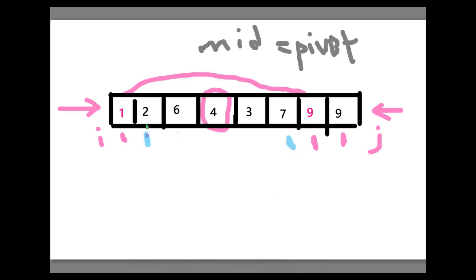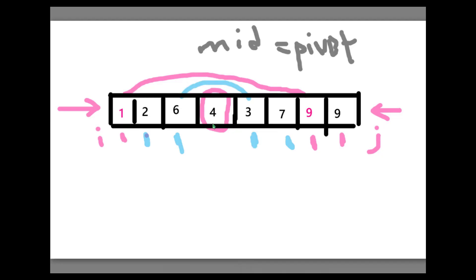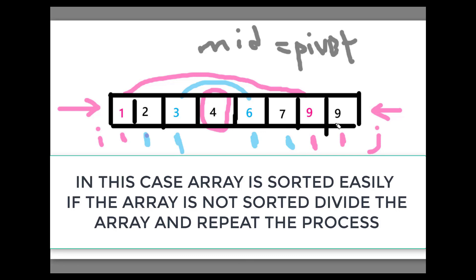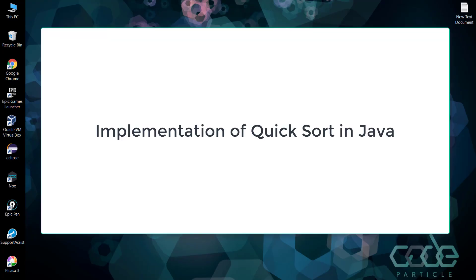Now check: 2 greater than 4 — no. Next, 6 is greater than 4 — yes, stop here, change the side to right. 7 is less than 4 — no. 3 is less than 4 — yes, swap 3 and 6. Now you can see that the array is in sorted order: 1, 2, 3, 4, 6, 7, 9.